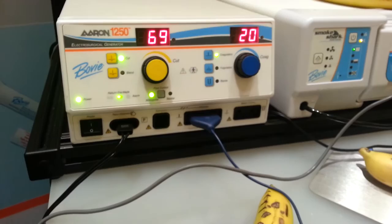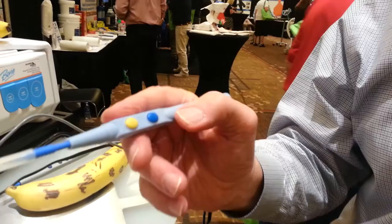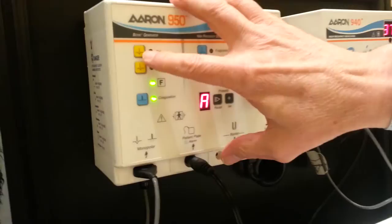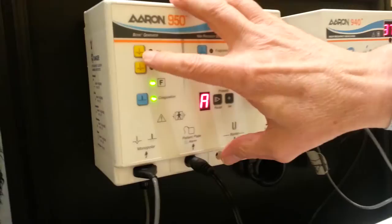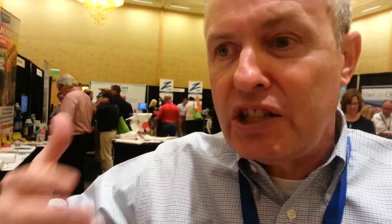The second thing, and probably the most important thing, is that the cut and coag are off the pencil. Where on the 950, I have to go up to the generator itself and hit cut, and then I have to come down to coag to be able to change it.